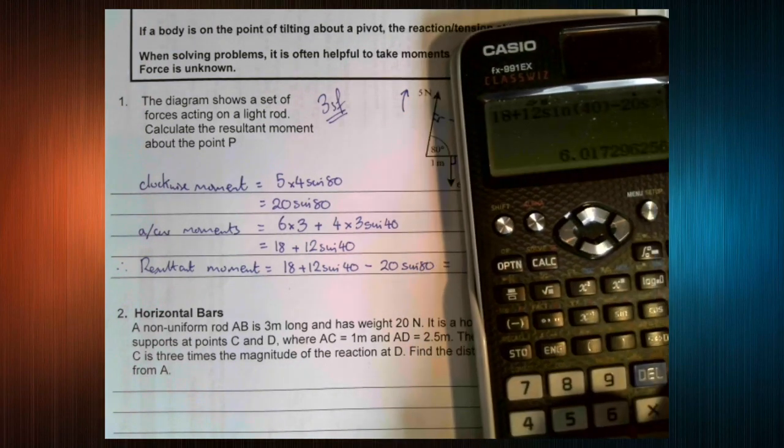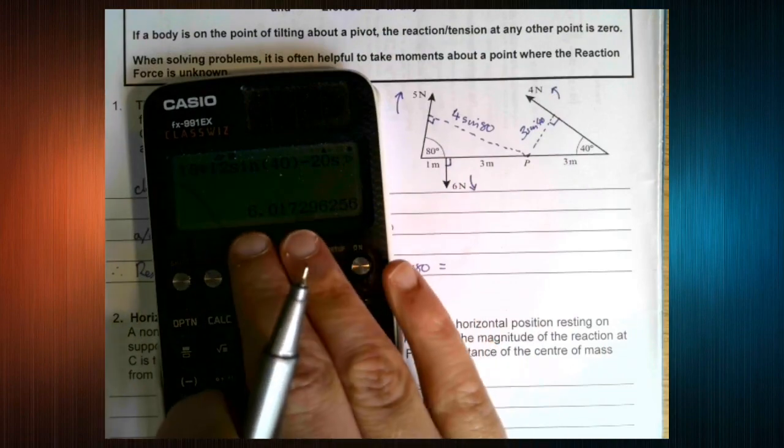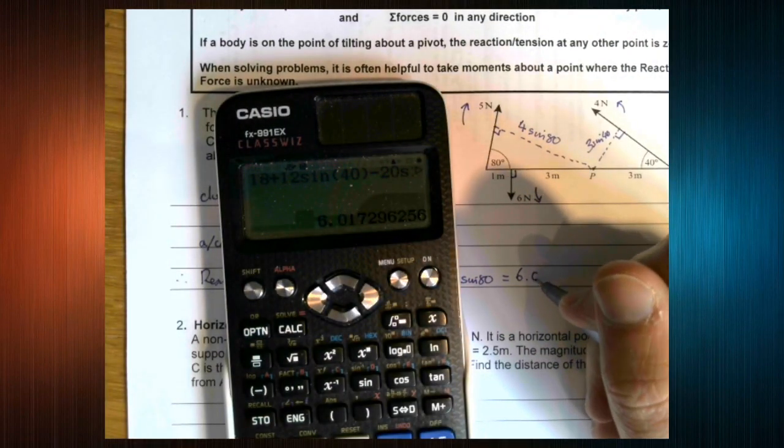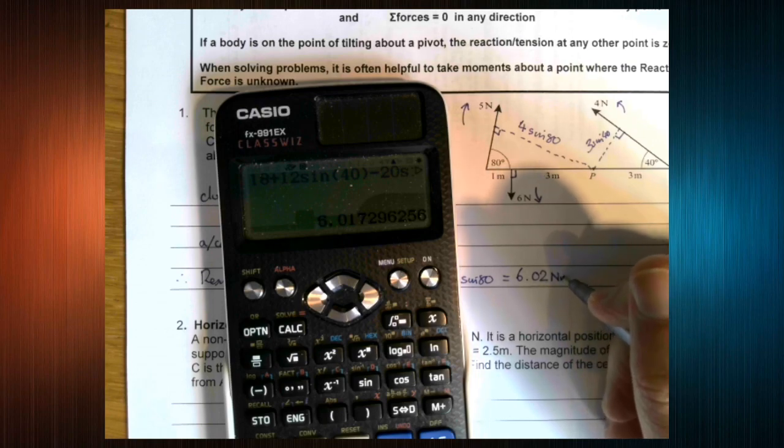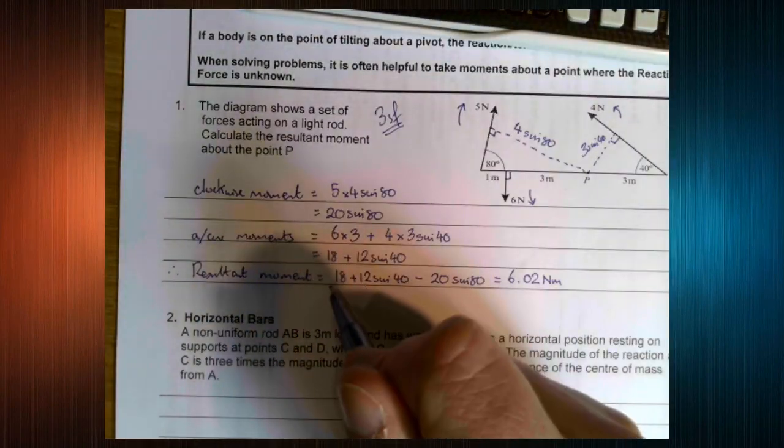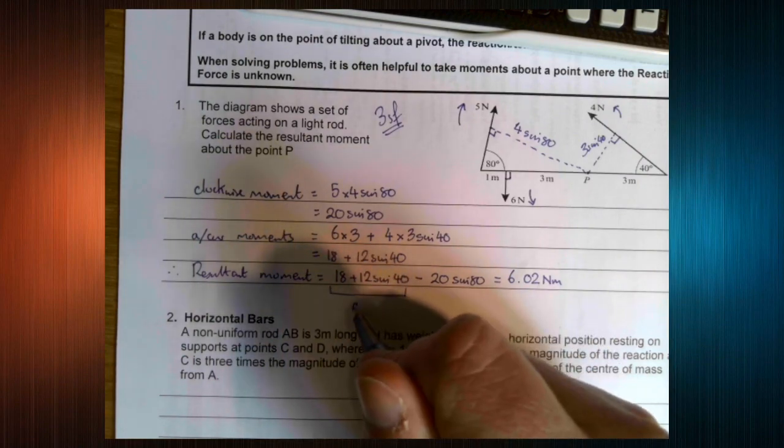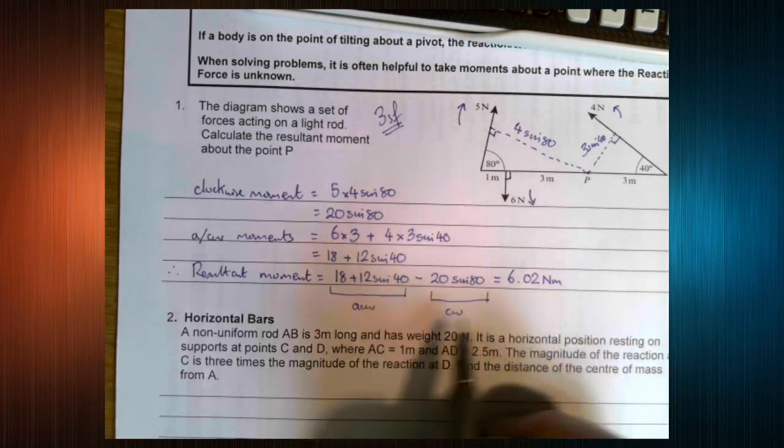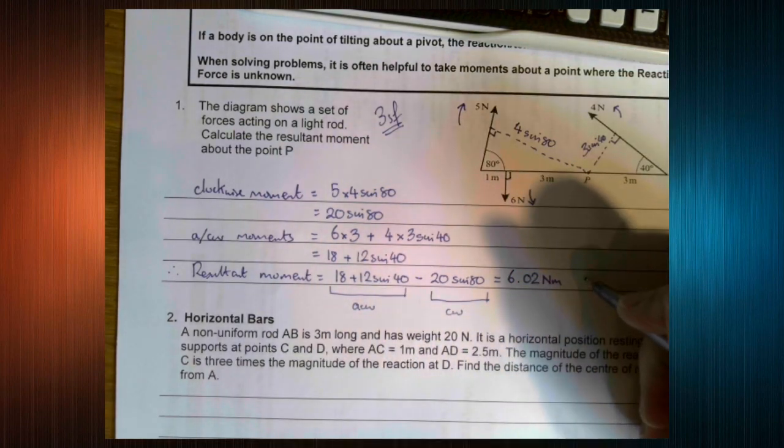And there we go. So that is our resultant moment. Now, this came out as positive. So we look at here: these were our anti-clockwise, this was our clockwise. This came out as positive, so it means our total moment is anti-clockwise.